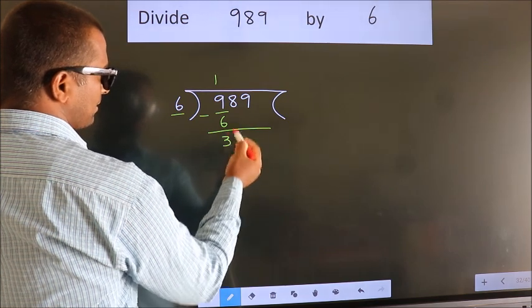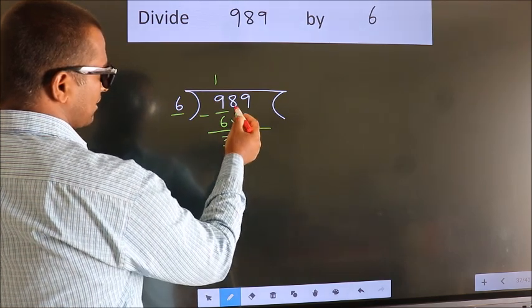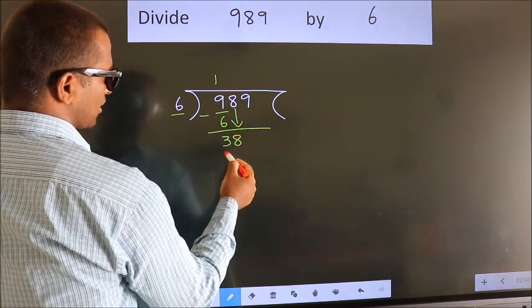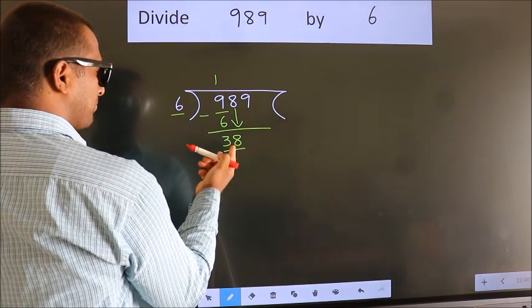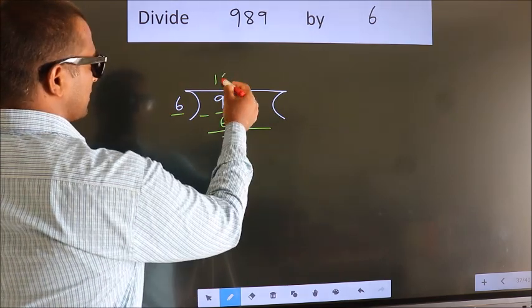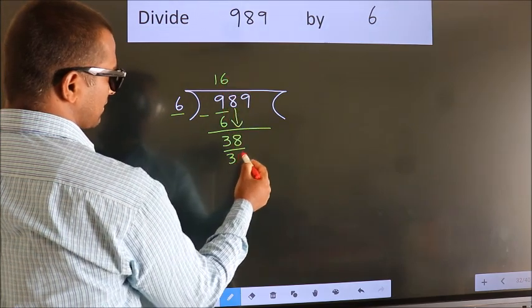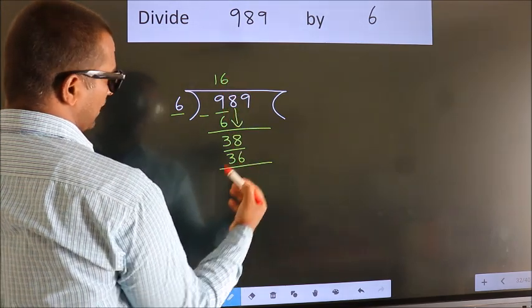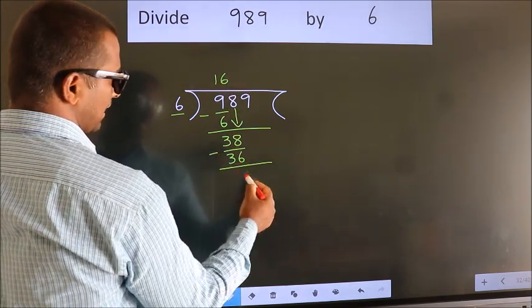After this, bring down the beside number, so 8 down, giving 38. A number close to 38 in the 6 table is 6 six 36. Now we subtract. We get 2.